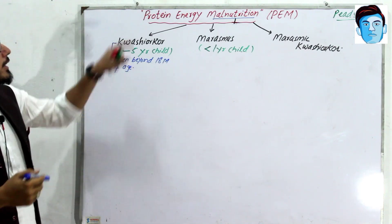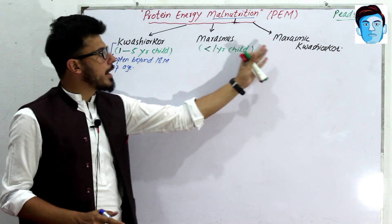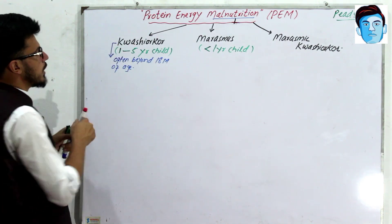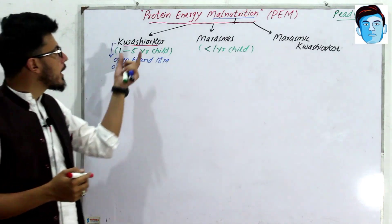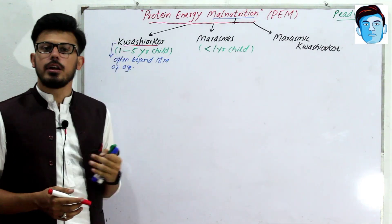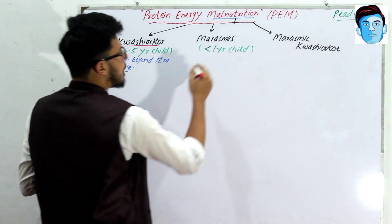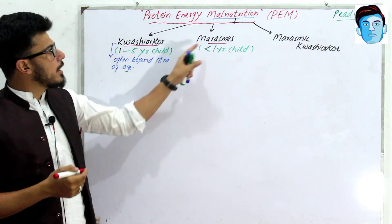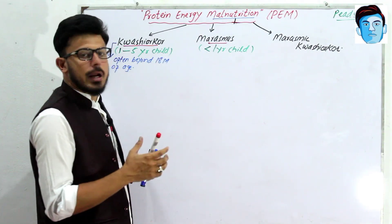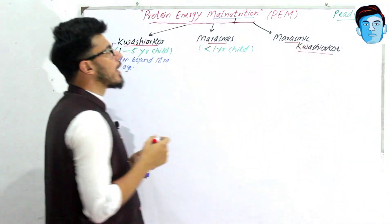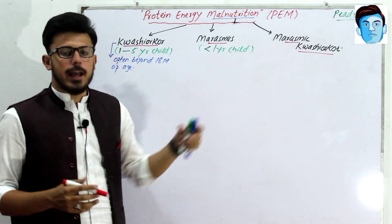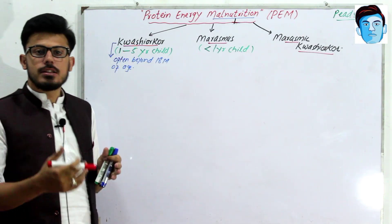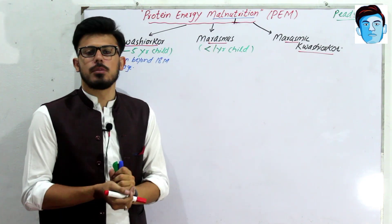In kwashiorkor there is protein deficiency but caloric intake is sufficient. In marasmus, which is more common in children less than one year, both protein deficiency and caloric deficiency occur. Marasmic-kwashiorkor is an overlapping condition showing features of both diseases.